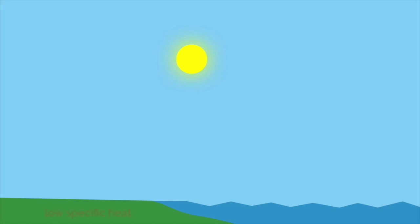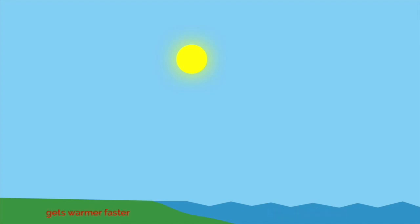This is happening during the day. During the day, the land is going to heat up differently than the water. We know that the land has a low specific heat, and the water has a high specific heat. And because of that, the land is going to warm up faster. The water is going to take a longer amount of time to warm up. So because the land is heating up faster, the air that sits above the land is going to be warmer, and the air that sits above the water is going to remain cooler.